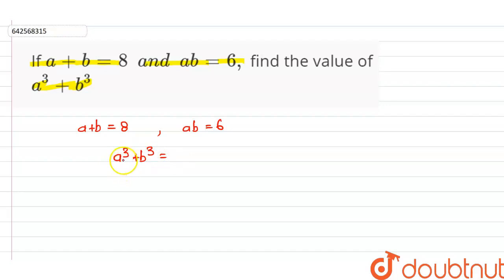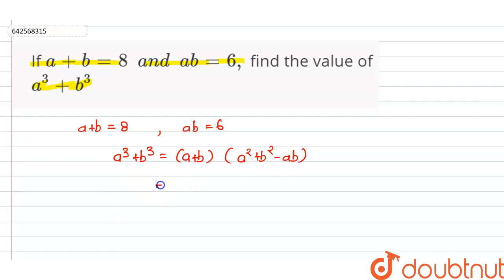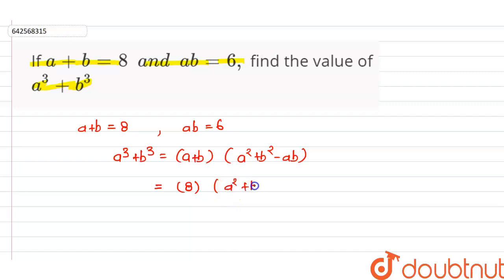Here we know the identity: a cubed plus b cubed equals (a plus b) times (a squared plus b squared minus ab). This is the identity. We have the value of a plus b, that is 8, and the value of ab, that is 6. So we will substitute into a squared plus b squared minus ab.